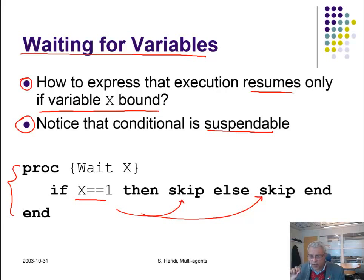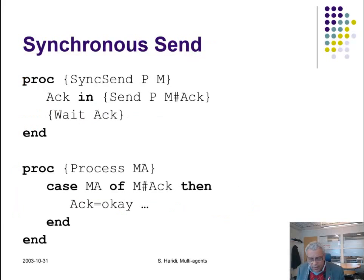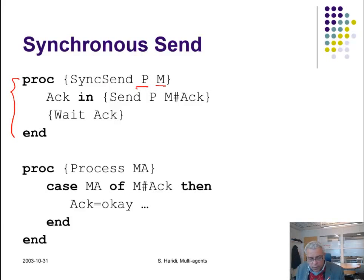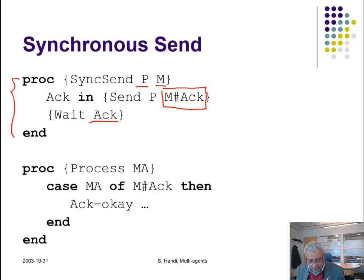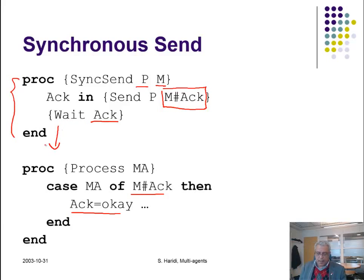Here is how to express synchronous sends. A thread wants to send a message M on a port, so what it does is create a pair: the message and some acknowledgement variable — a data flow variable — and it waits on that variable. That variable will be bound only by the receiver. When the receiver receives the message, it can bind the variable, and only then can the sender continue.